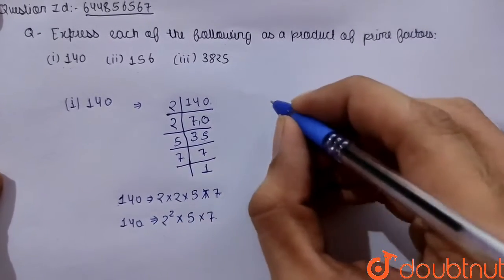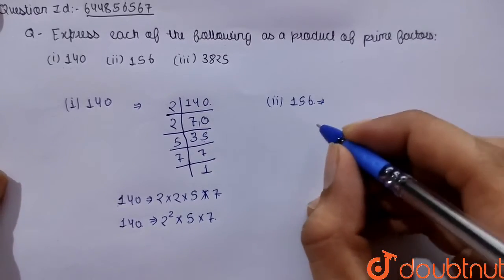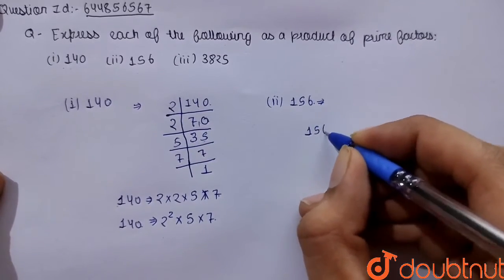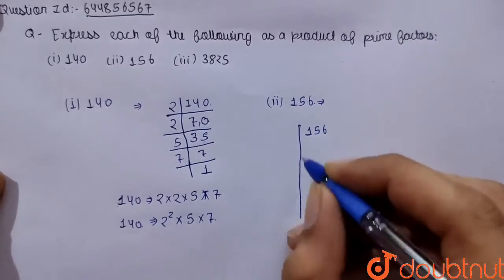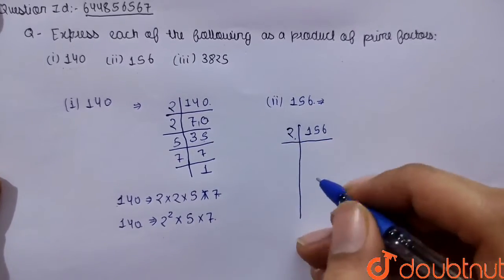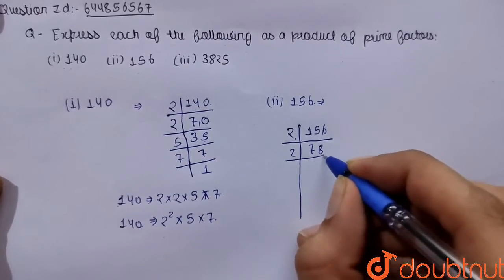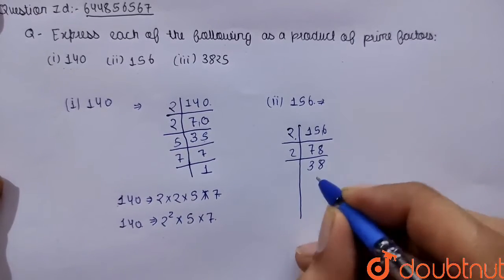Now let's talk about the second one which is 156. Let's do prime factorization of 156. We have 6 in the end which is even, so it is divisible by 2. So 2, 7s are 14. 2, 8s are 16. Again 2, 3s are 6. 2, 8s are 16.